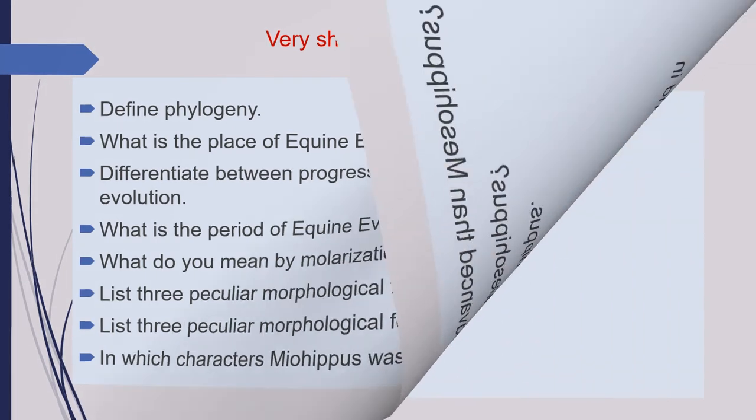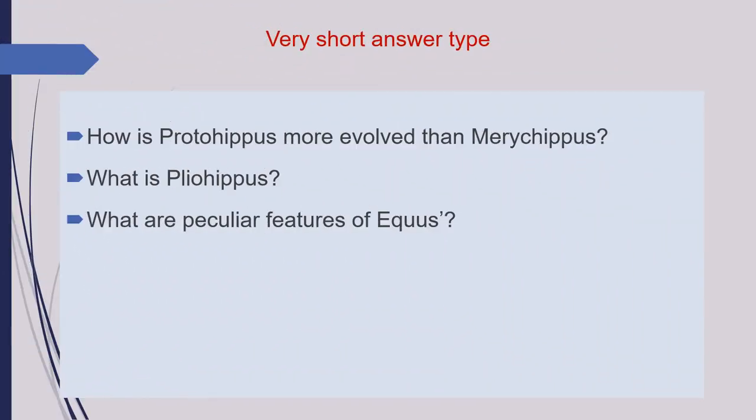Next is: how is proto-hippus more evolved than merichippus? Next is: what is pleo-hippus? And the last question of this category is: what are peculiar features of equus?